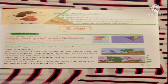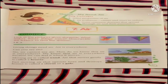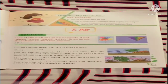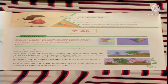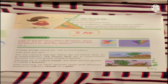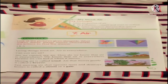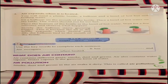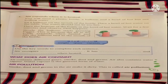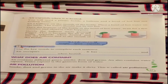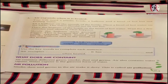Air that moves gently is called a breeze. Fast moving air that uproots trees and destroys homes is called a storm. The next point is: what does air contain? Air contains different gases, smoke, dust, and germs.